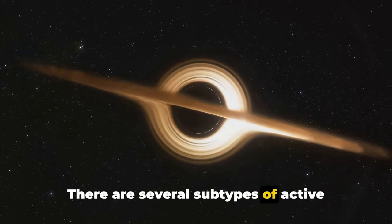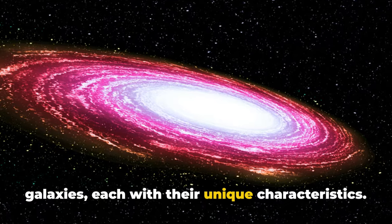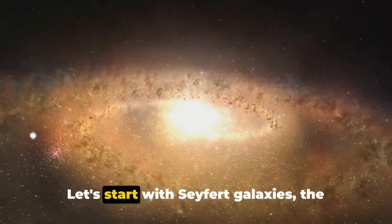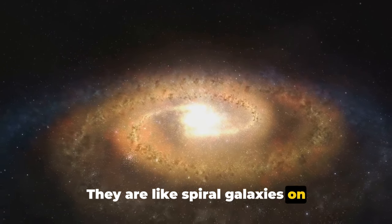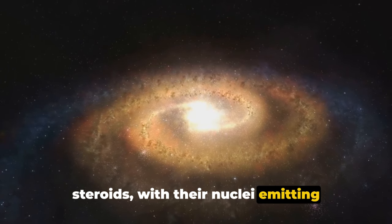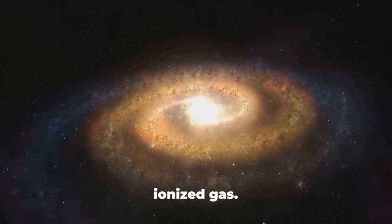There are several subtypes of active galaxies, each with their unique characteristics. Let's start with Seyfert galaxies, the most common type. They are like spiral galaxies on steroids, with their nuclei emitting spectral lines that indicate highly ionized gas.